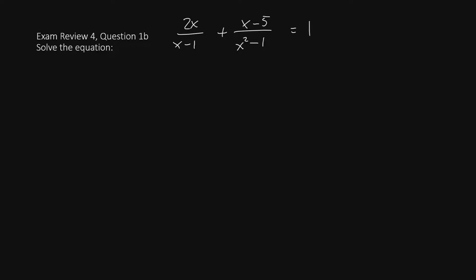Hello there once again. Welcome back to our exam review series. This time we'll be doing exam review for question 1b, in which we are asked to solve this equation, 2x over x minus 1 plus x minus 5 over x squared minus 1 equals 1.